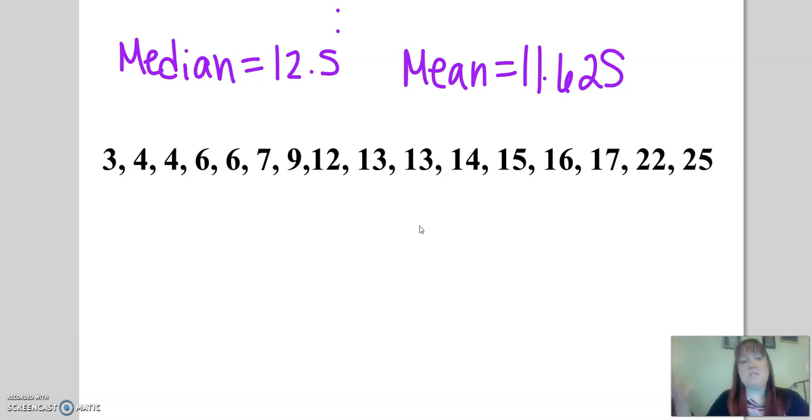But the mode is the one that you see the most. And so this one's really helpful when you're doing something like trying to find the most popular ice cream flavor or something like that. When we're taking categorical data, we can use the mode, because it tells us the number of responses.